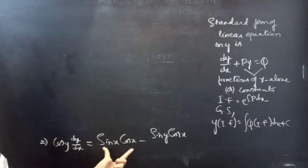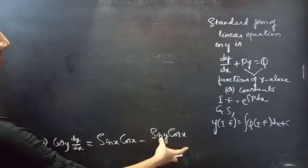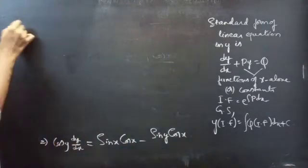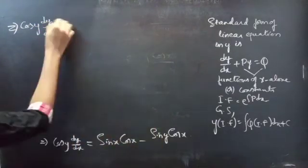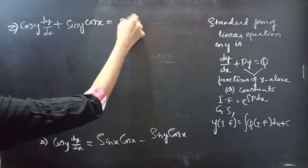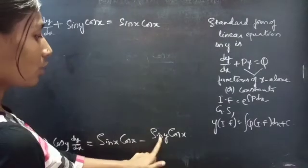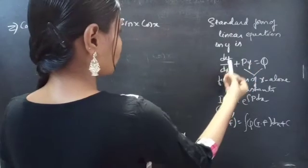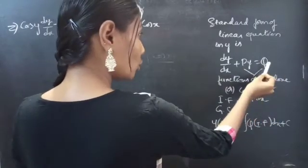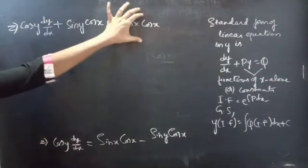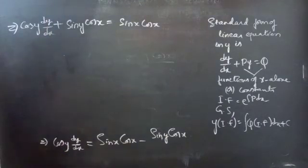If you notice, in the first term of RHS you're having functions of x, but in the second term you're having a function of y and a function of x. So we'll take the function of y term to the LHS. You'll get cos y into dy/dx plus sine y cos x equals sine x into cos y. We leave the function of x in the RHS and take the mixed term to the LHS for our convenience.